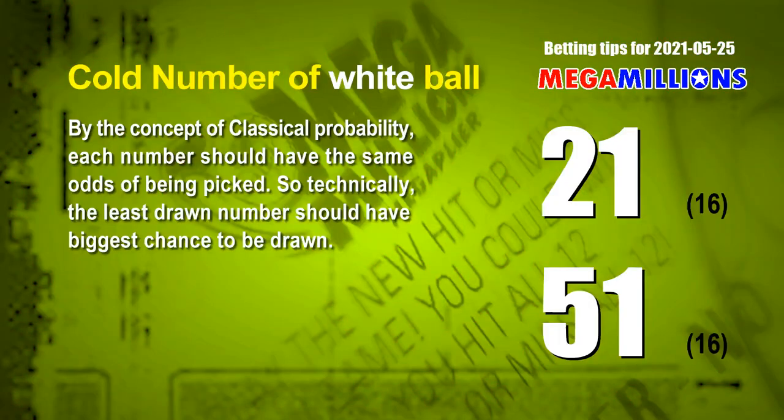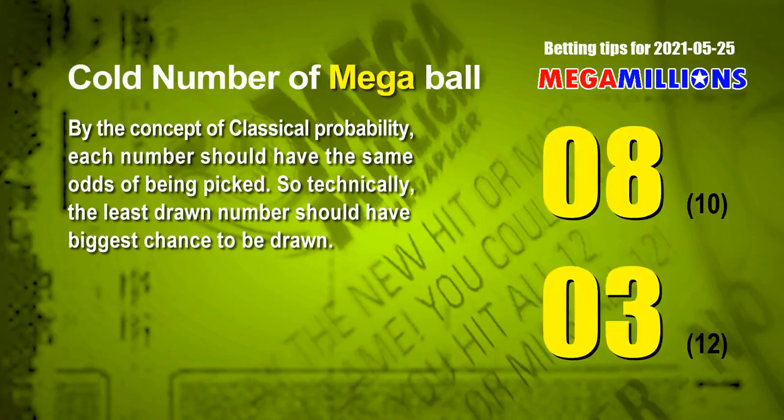At the end of this video we have two more tips: cold numbers and overdue numbers. By the concept of classical probability, each number should have the same odds of being picked, so technically the least drawn number should have the biggest chance to be drawn. The two coldest white balls are 21 and 51 — each drawn only 16 times in the last 372 draws. The two coldest Mega Balls are 08 and 03: Mega Ball 08 drawn only 10 times, Mega Ball 03 drawn only 12 times in the last 372 draws.